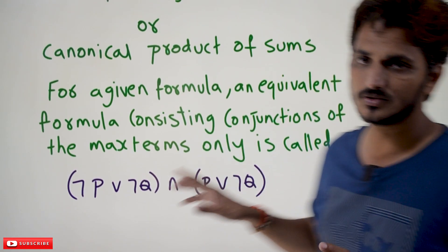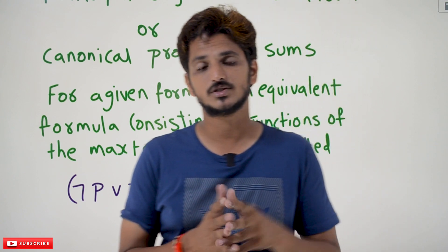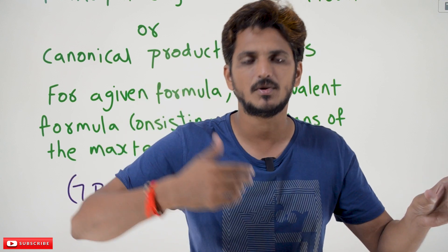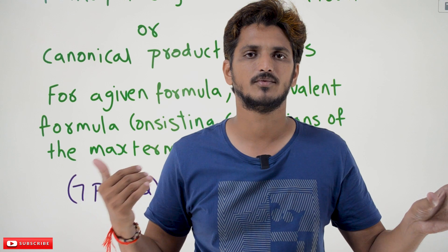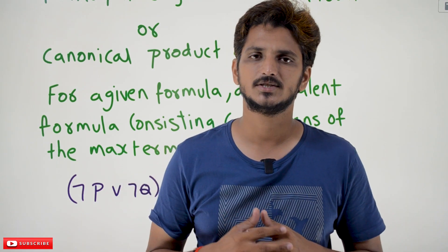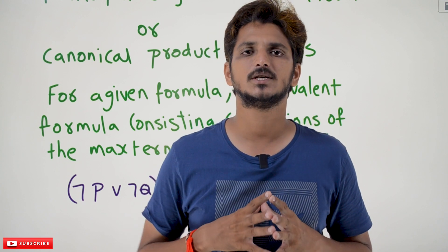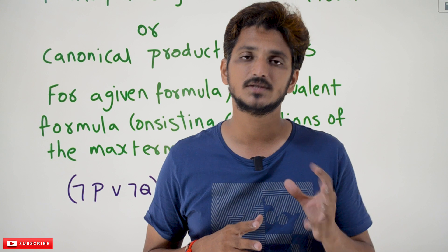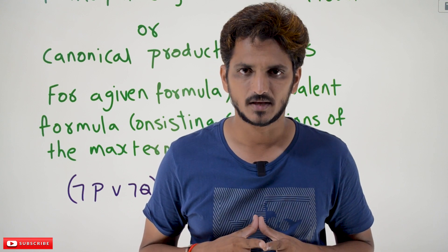So these are the definitions. In our next classes, we are going to do the conversion: given a proposition, how to convert it into canonical sum of products or principal disjunctive normal form, and principal conjunctive normal form. Hope you understand these definitions. If you have any questions, please post them in the comment section below. Thanks for watching. If you haven't subscribed to our channel, please subscribe and press the bell icon for the latest updates. Thank you.